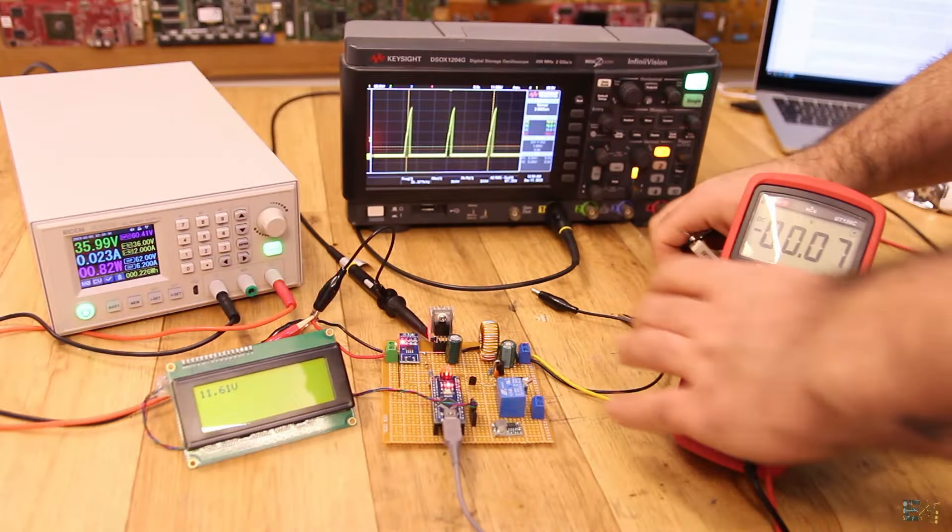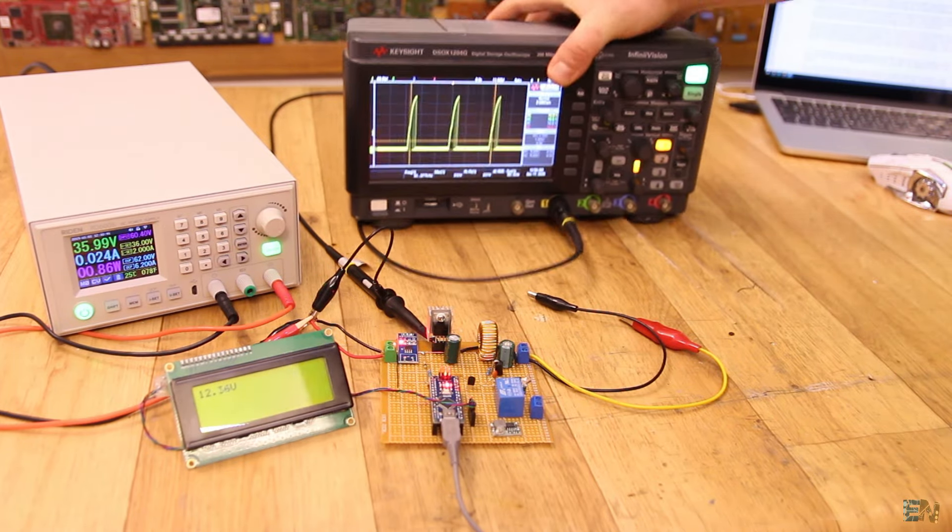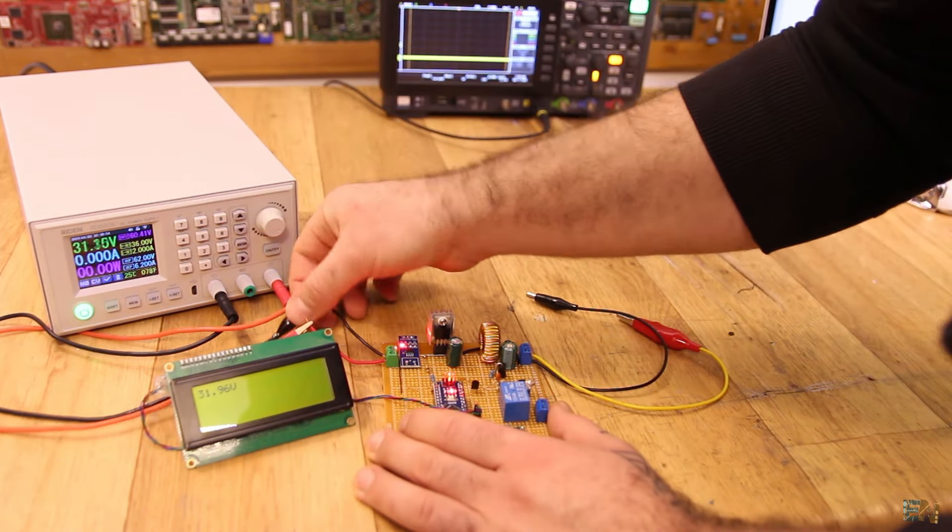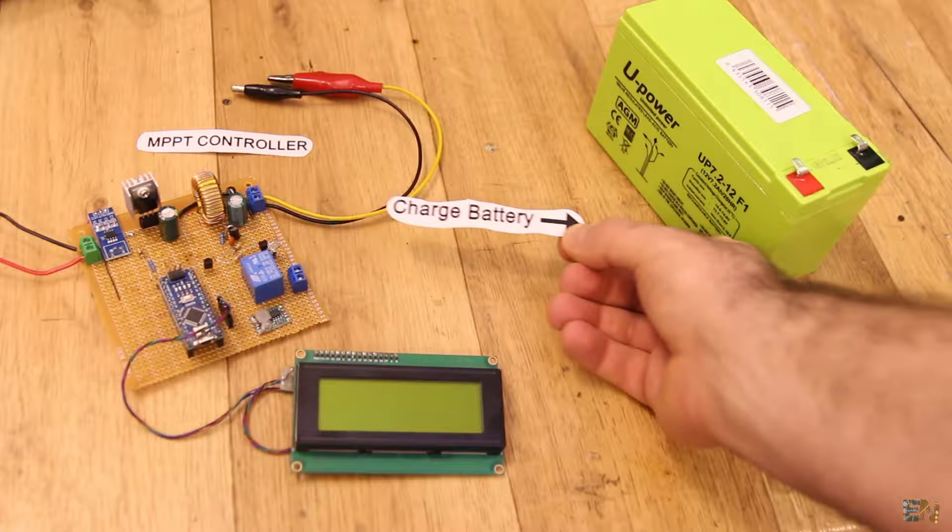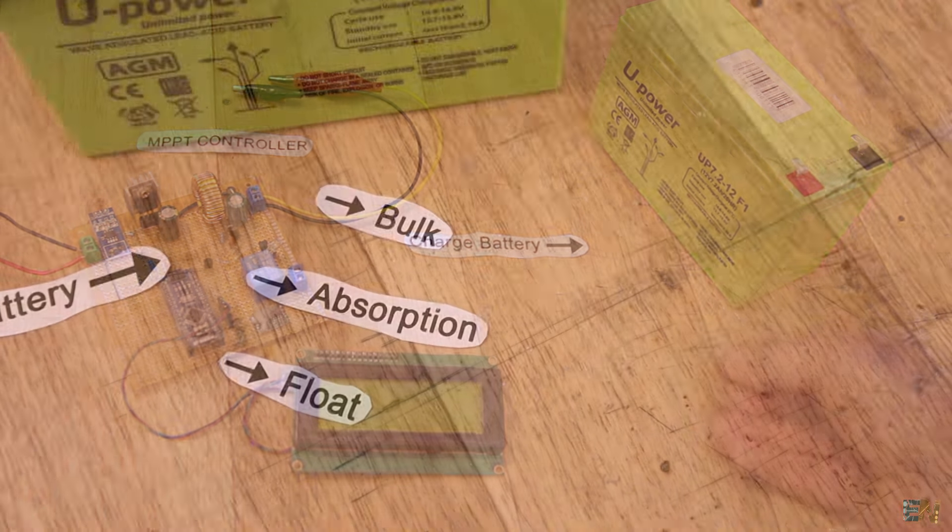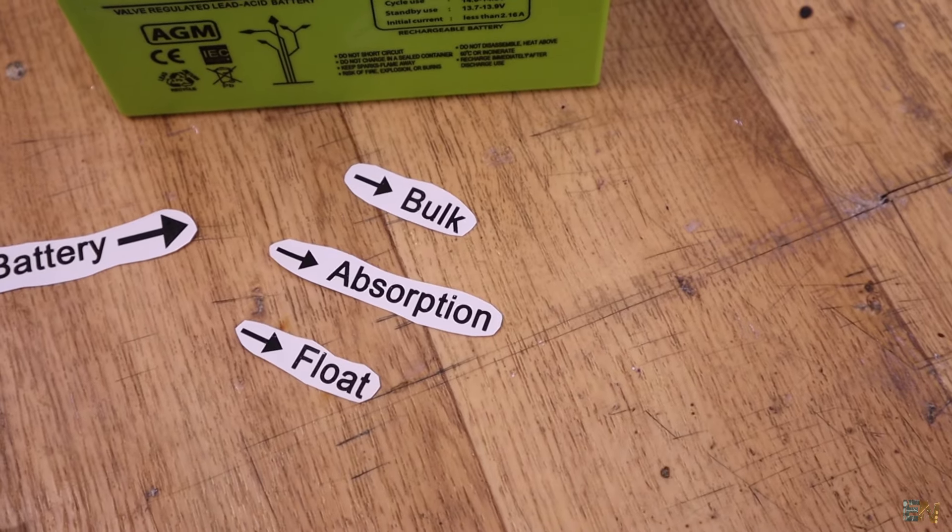Controlling the current and voltage, we can make our code for the MPPT. Remember from the beginning that we have 3 stages, the bulk stage, the absorption and the float stage for the battery charging process.